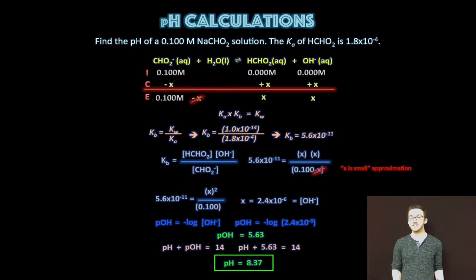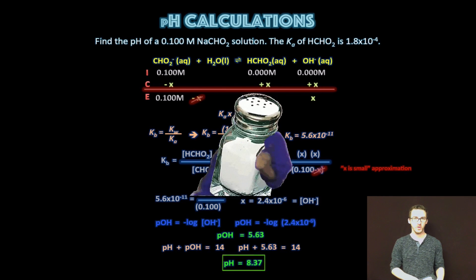As always, take a moment at the end to stop and think about whether or not your answer makes sense. Our salt, sodium formate, is coming from a strong base and a weak acid. So we've decided that it's a basic salt. The solution is going to have a slightly basic pH because the formate ion of that salt is going to split or hydrolyze water and form additional hydroxide ion. So it makes sense that our pH is slightly basic 8.37. We are done.